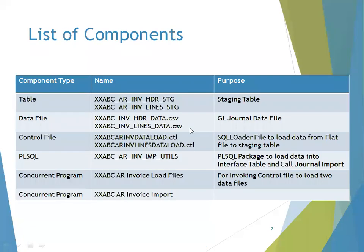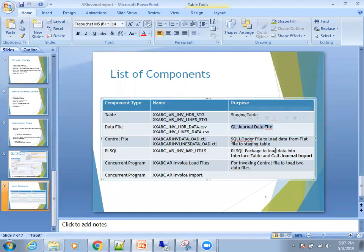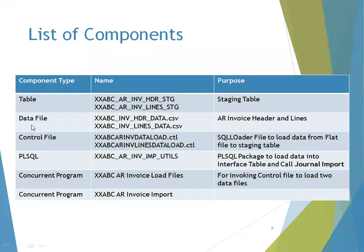Let's look at the list of components. We have AR invoice header and lines data. The first two are staging tables, and the second section covers data files. We have two control files and one PL/SQL API. There are two concurrent programs: one for loading data into the staging table, and another for loading data into the base table by invoking the PL/SQL API.